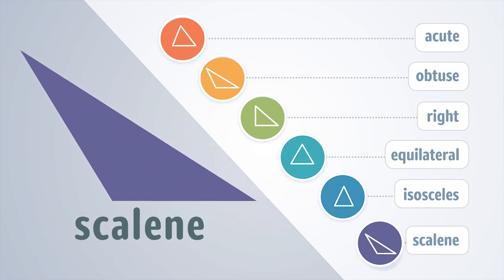A scalene triangle is the final type of triangle. Scalene triangles look different from other types of triangles — they have no equal sides or angles. When you draw a scalene triangle, be careful that no two sides are the same length and no two angles are equal.